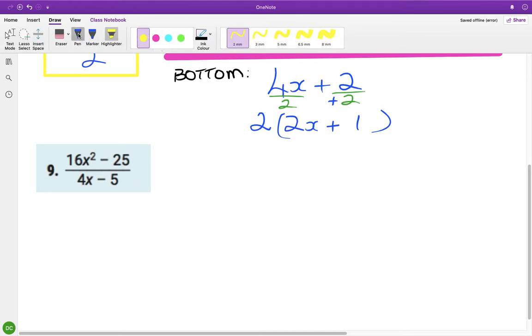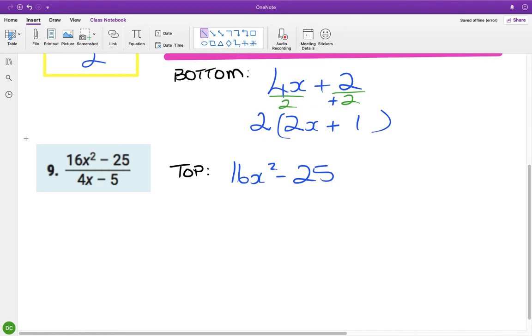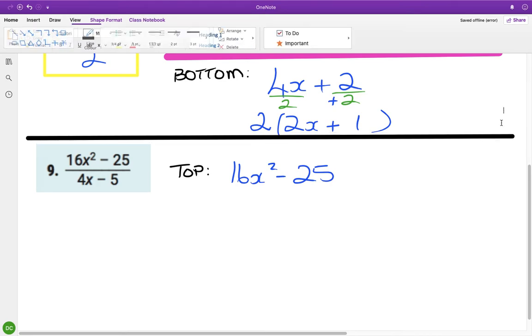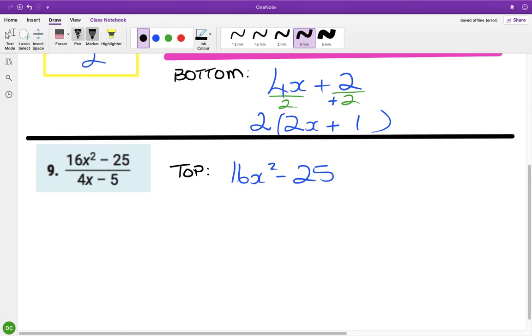The second one, the top line, is 16x squared minus 25. Sorry, just break into this. Okay, just so it doesn't look confusing. So is it a trinomial? It's not. Why? Because there's only two terms.